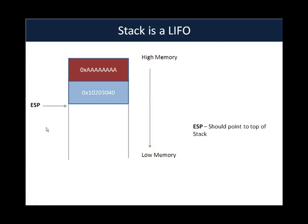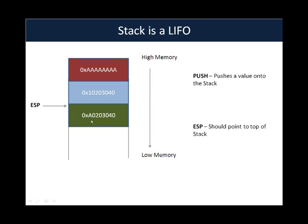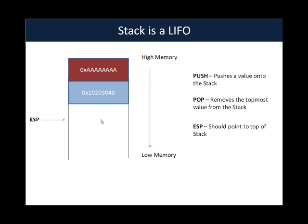A stack supports only two operations. The first is a push operation, which pushes data into the stack. As soon as we push a value — say A0, 20, 30, 40 (all in hex) — what one needs to do is update the stack pointer. So ESP will point to the top of the stack after the addition of the new value. And when you're done using that value and want to remove it from the stack, you use the pop operation. Once the pop operation is used, the data is removed from the stack and you fix ESP to point to the top of the stack again.